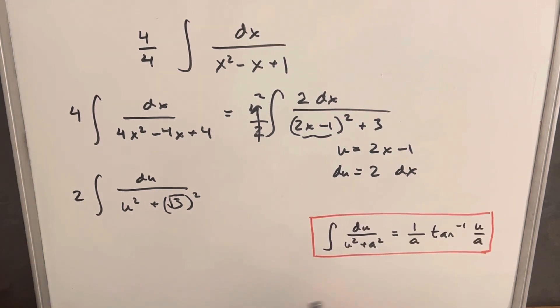Now to continue, we'll just use our arctan formula that we have over here for this integral of du over u squared plus a squared. Our a is going to be the square root of 3 right here. Let's just use our formula. We're going to have 2, 1 over a, so that's going to be over the square root of 3, tan inverse u over the square root of 3.